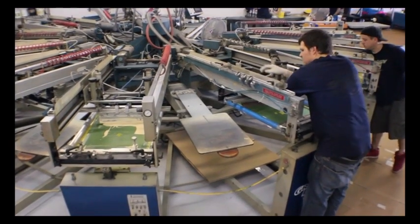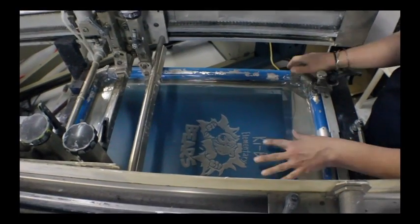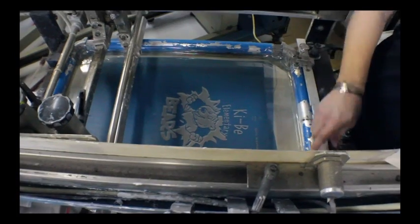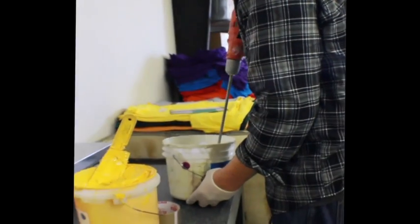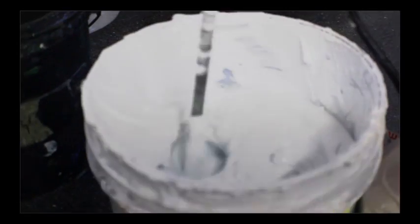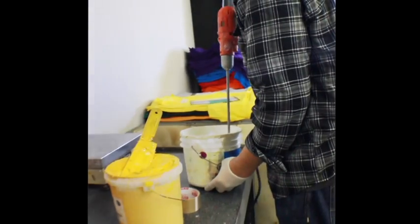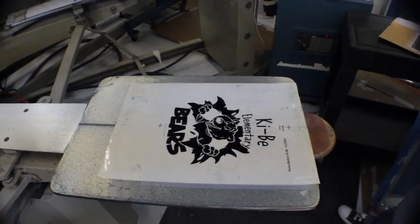Next, machine operators load the taped screens on the automatic press. If the shirt colors being printed are anything other than white, then a white underbase is applied, then flash dried. This assures that the shirt color will not show through the other colors being printed.